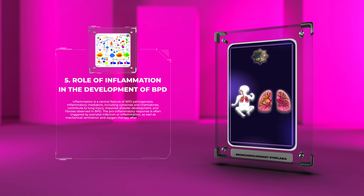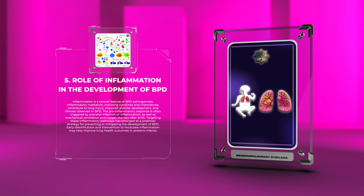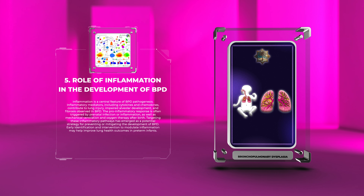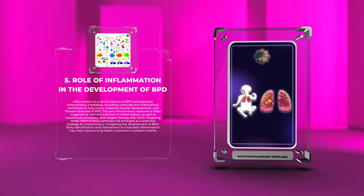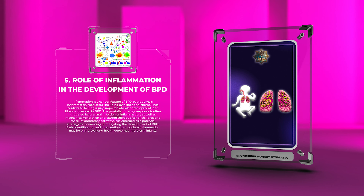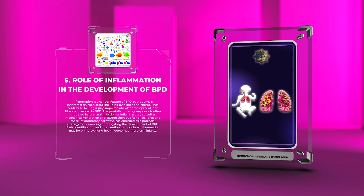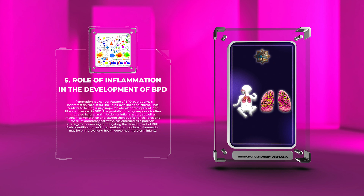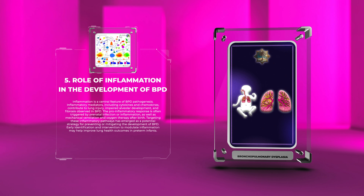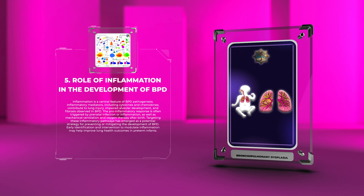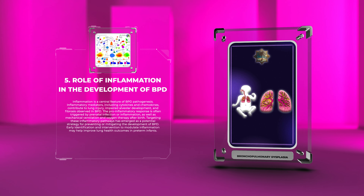Inflammation is a central feature of BPD pathogenesis. Inflammatory mediators, including cytokines and chemokines, contribute to lung injury, impaired alveolar development, and fibrosis observed in BPD. The pro-inflammatory response is often triggered by prenatal infection or inflammation, as well as mechanical ventilation and oxygen therapy after birth. Targeting these inflammatory pathways has emerged as a potential strategy for preventing or mitigating BPD development.